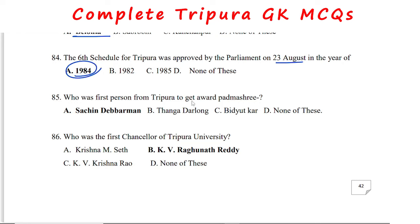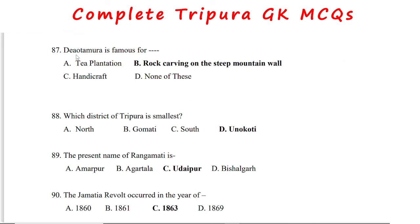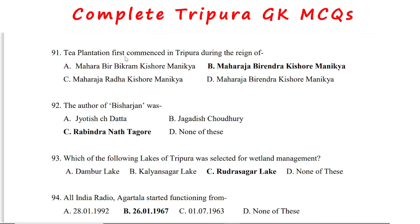The first person from Tripura to receive the Padma Shri award was Sachin Dev Burman. The first chancellor of Tripura University was K.V. Raghunath Reddy. Debtamura is famous for rock carvings on steep mountain walls. The smallest district of Tripura is Unokoti. The present name of Rangamati is Udaipur. The Jamatiyya revolt occurred in 1863. Tea plantation first commenced in Tripura during the reign of Maharaja Birendra Kishore Manika.